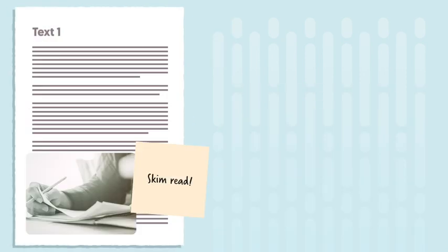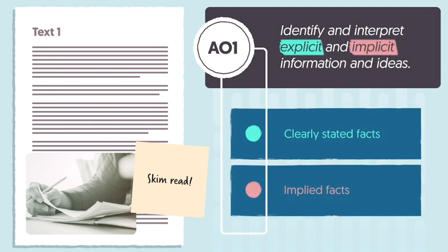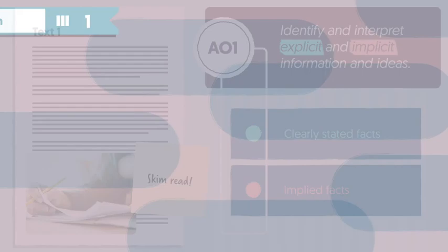Before you begin to answer the question, the best thing to do is re-read or skim through the part of the text you're asked to focus on. A good thing to remember is that on Paper 1, Questions 1 and 2, they both examine assessment objective 1 — that's your ability to identify and interpret explicit and implicit information and ideas, so pulling out the facts that are clearly stated and the ones that are just implied.